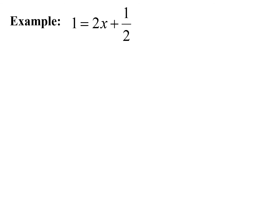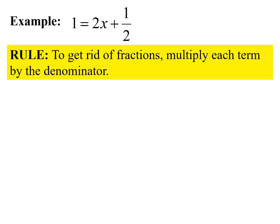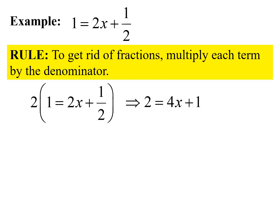Next example: 1 equals 2x plus one-half. Our variable is on the right-hand side and we have a fraction. The third rule: to get rid of a fraction, multiply each term by the denominator. My denominator is 2, so I multiply the entire equation by 2 using the distributive property. Two times 1 is 2, two times 2x is 4x, and two times one-half is 1. Now I have 2 equals 4x plus 1, which is much easier than dealing with fractions.